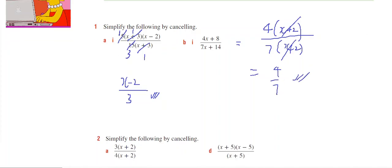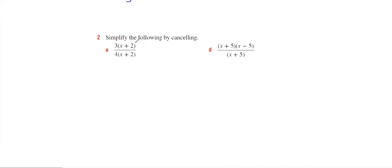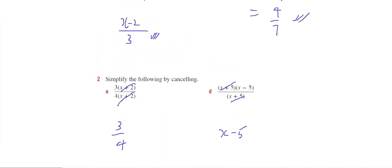Looking at question number 2, I've got (x + 2) cancels with (x + 2) to leave 3 over 4, and (x + 5) cancels with (x + 5) to leave (x - 5). So where we have situations where we need to factorize,